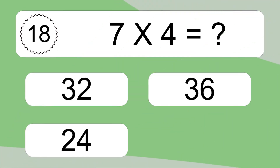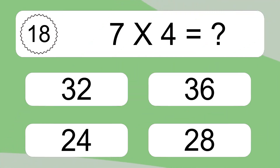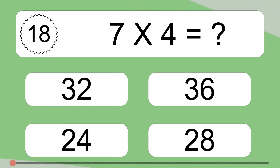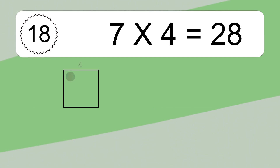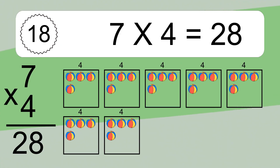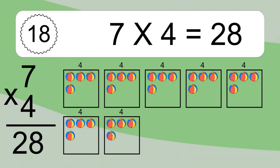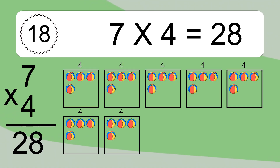7 times 4 equals what? 7 times 4 equals 28. We have 7 boxes, and each box has 4 colorful balls inside. If you count all the balls in all the boxes together, you will have 7 times 4 balls. This equals 28 balls.